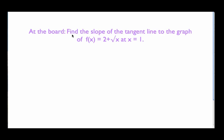We're trying to find the slope of the tangent line in this example to the graph of f(x) = 2 + √x at x = 1. Let's quickly just throw down a set of axes here so we can see what we're talking about — just a crude, hand-drawn graph.